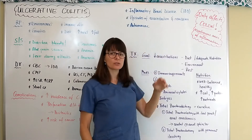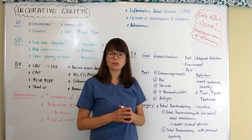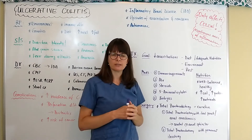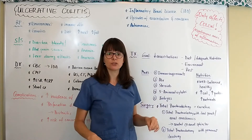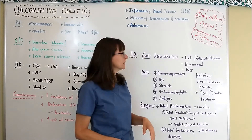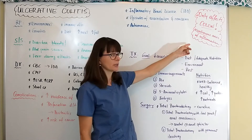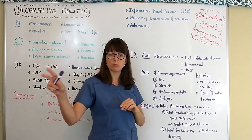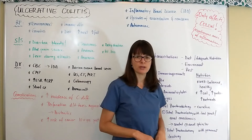Another difference is that in ulcerative colitis, the inflammation typically starts at the rectum and then works its way up the digestive tract, whereas in Crohn's disease it is more interspersed in different parts of the GI system. There are continuous areas of inflammation in ulcerative colitis, whereas in Crohn's disease the inflammation is scattered at different locations throughout the GI system.